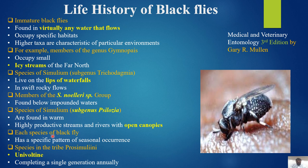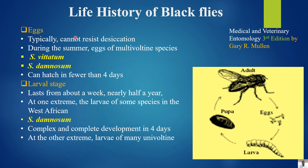Species in the tribe Prosimuliini are univoltine, completing a single generation per year. Life history: eggs typically cannot resist desiccation during summer. Eggs of multivoltine species such as S. vittatum and S. damnosum can hatch in fewer than four days. Larval stages last from about a week to nearly half a year. At one extreme, larvae of some West African S. damnosum complex species complete development in four days; at the other extreme, larvae of many univoltine species develop much more slowly.